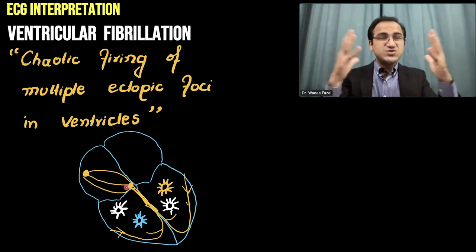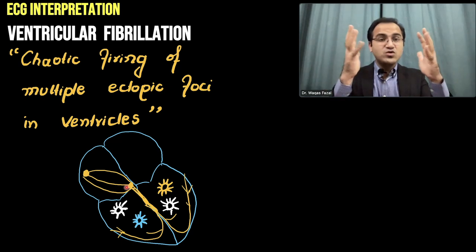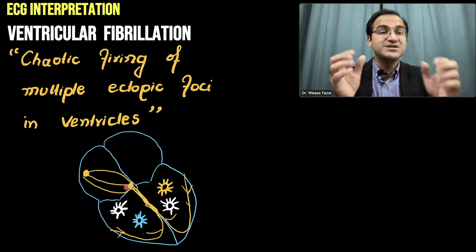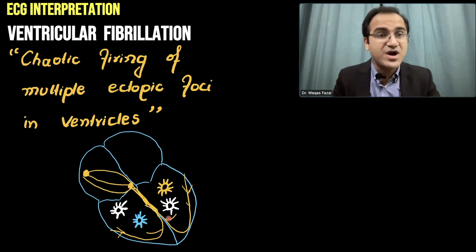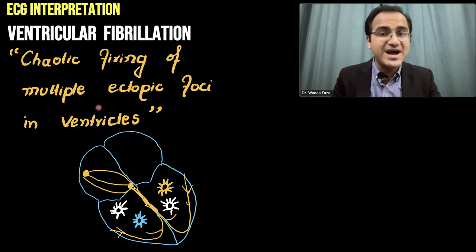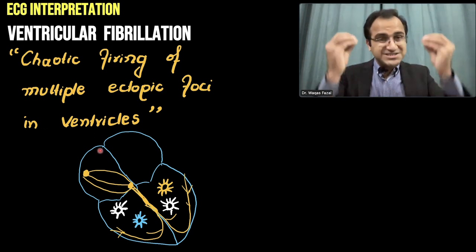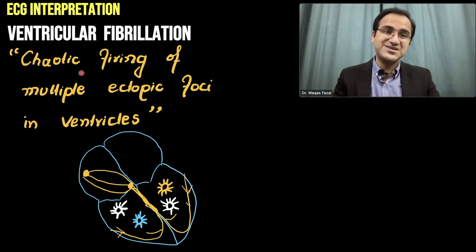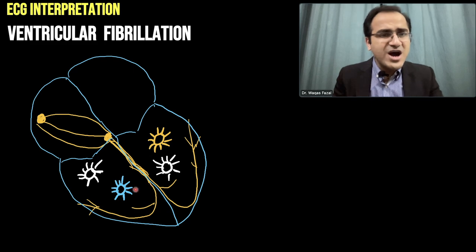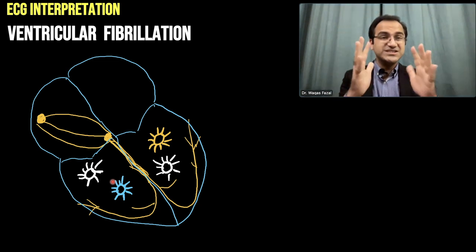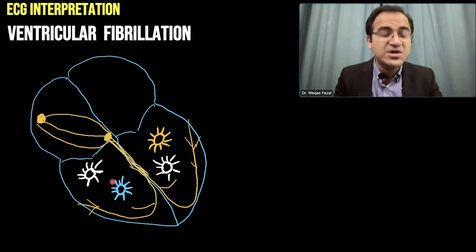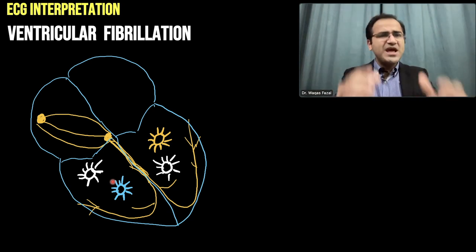These ectopic foci generate so much current that the ventricle literally goes into seizures. The ventricles do not contract properly — they seize due to electrical activity and are literally on fire with this much electrical activity. Multiple ectopic foci producing electrical currents totally disturb the heart's electrical activity. These ectopic foci produce abnormal currents resulting in seizures of the ventricle.